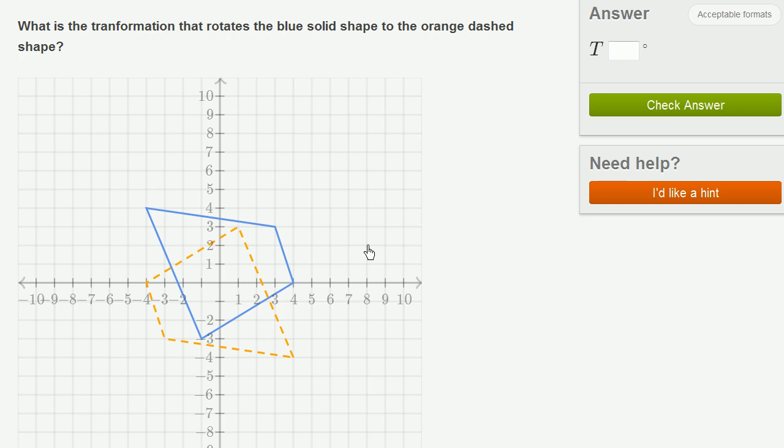So the main thing is to pick a point on the blue shape and see where does it end up on the orange dashed shape. And I'll pick this point right over here, because you can see it's kind of pointing straight to the top left. And then when you go onto the orange dashed shape, it's pointing to the bottom right.